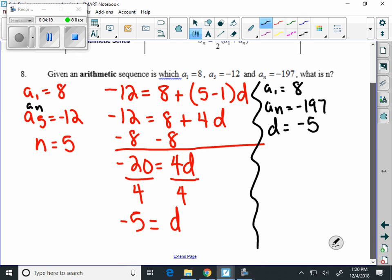And that is a sub n, negative 197, equals a sub 1 which is 8, plus n minus 1 times d which is negative 5. And we want to solve this equation.